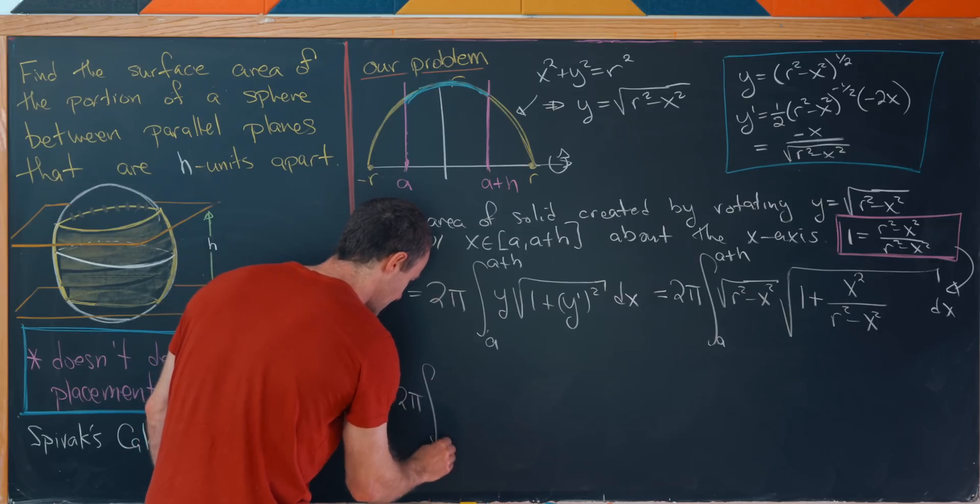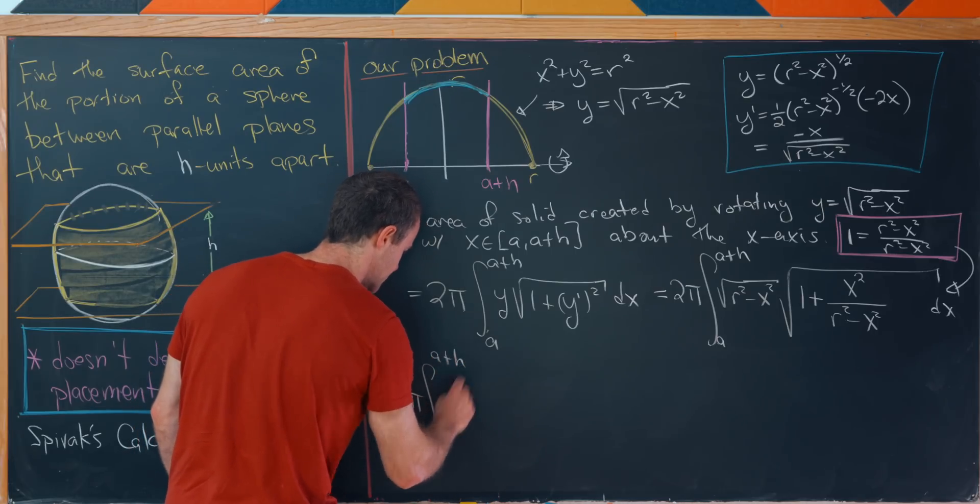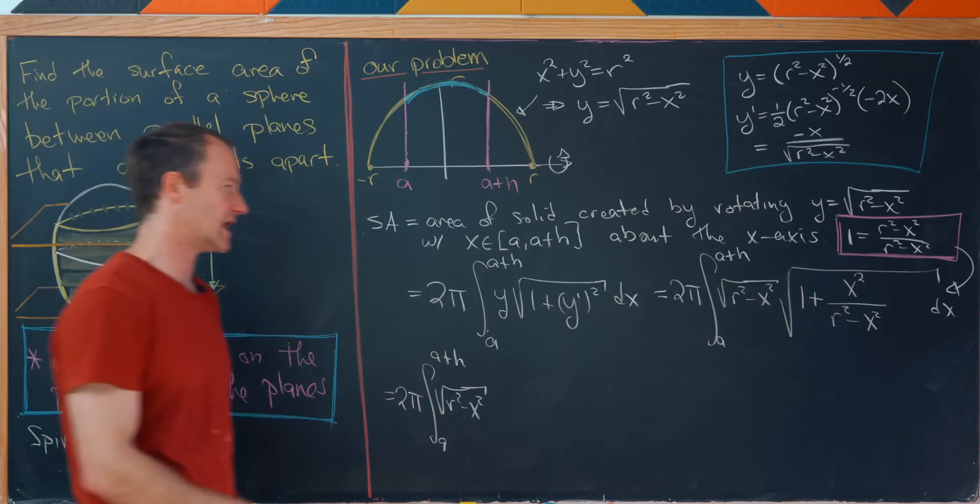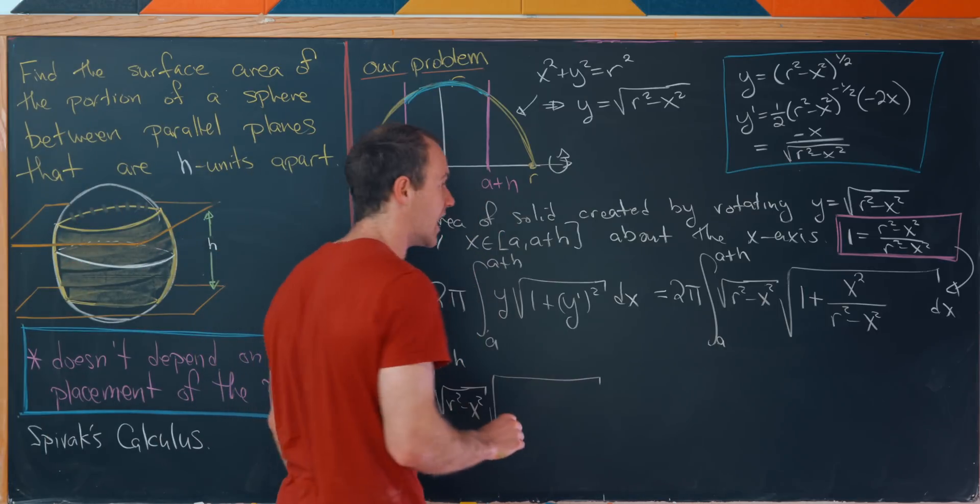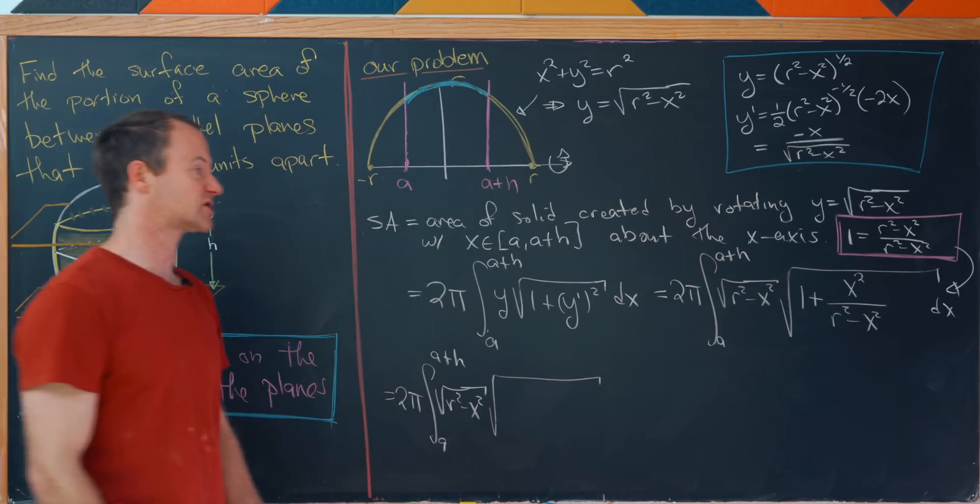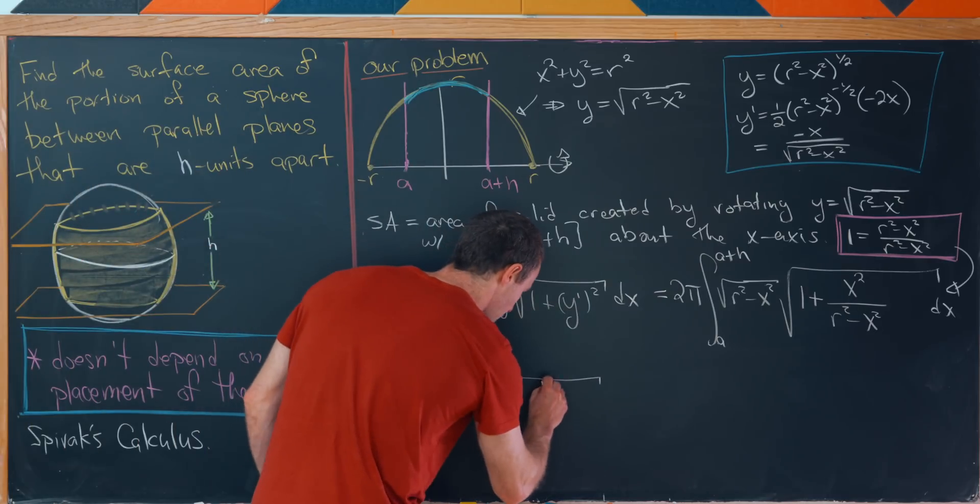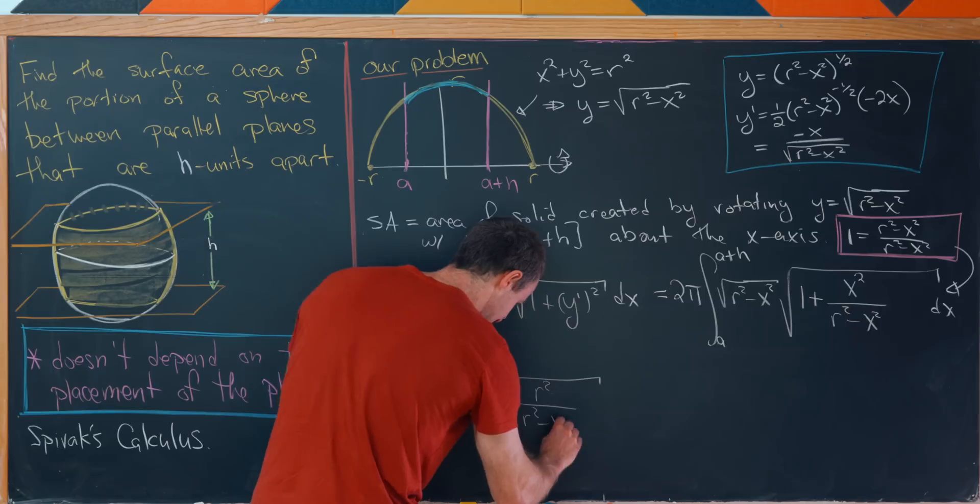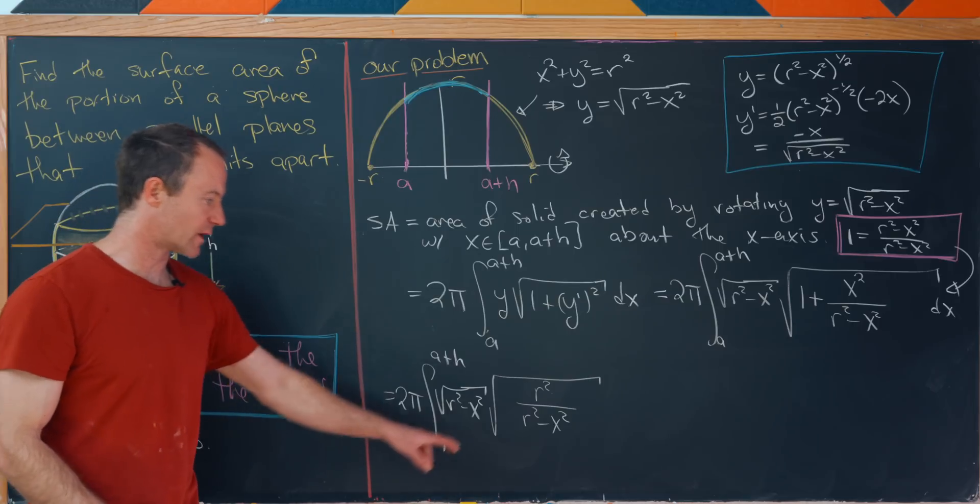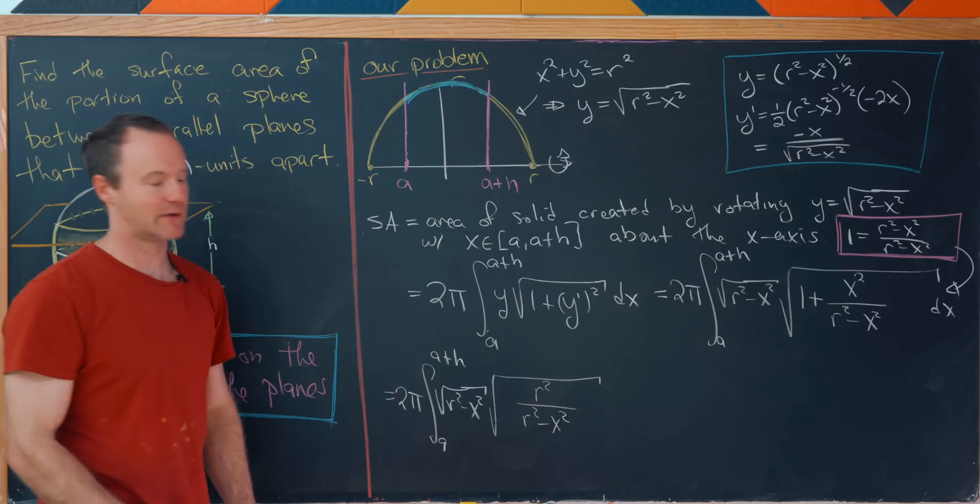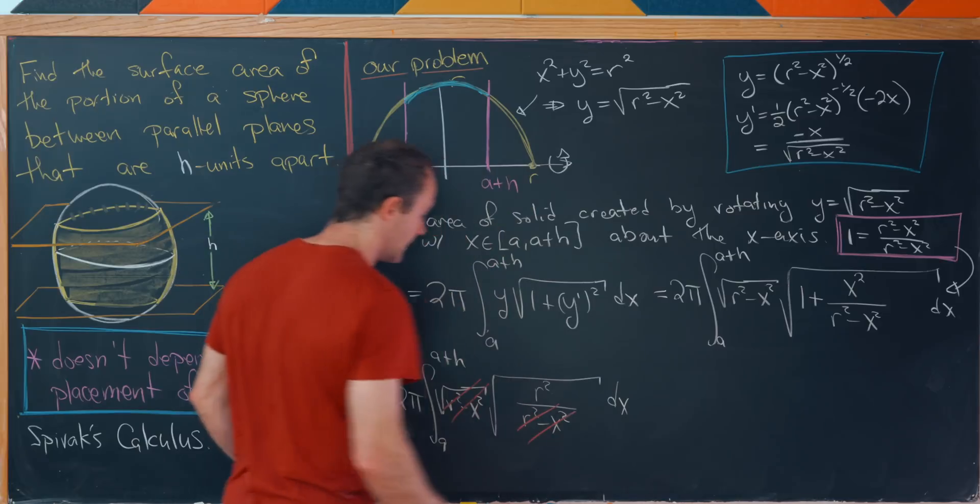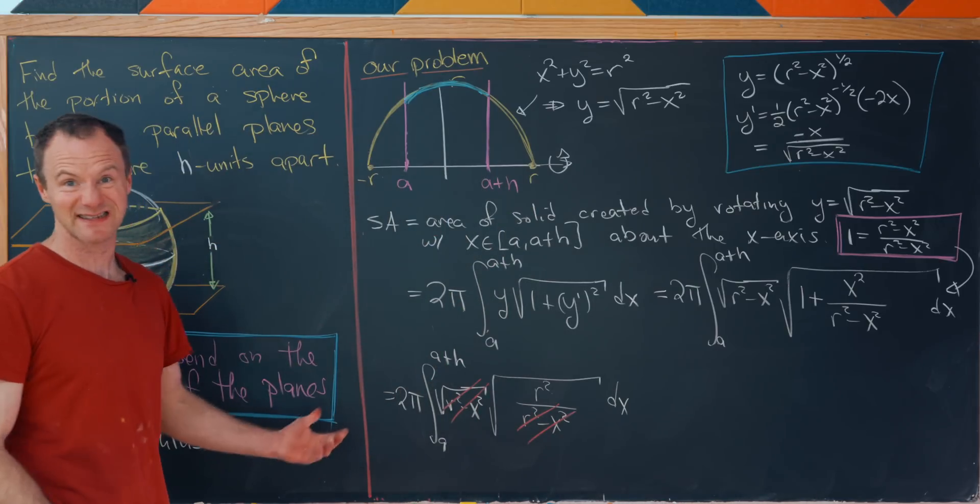So let's see what that will leave us with. We'll have 2 times pi, the integral from a to a plus h. And then we have this square root of r squared minus x squared. That's sort of like just coming along for the ride at the moment. And then we have the square root of, so we're placing this 1 with the version that we have right here. We see that the x squareds will cancel and we'll be left with r squared over r squared minus x squared. But now check it out. We have a square root of r squared minus x squared in the numerator and in the denominator. So that means these will cancel.